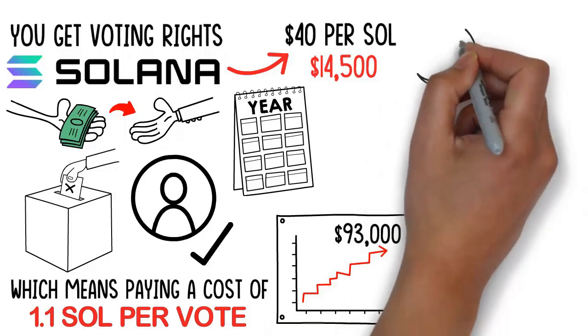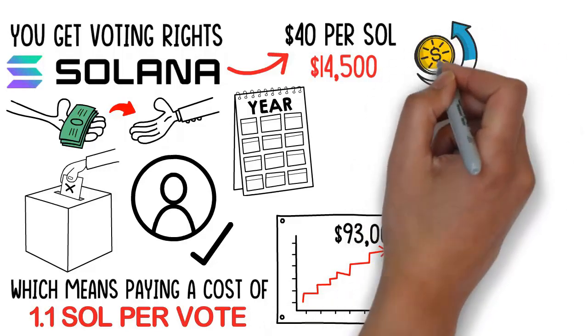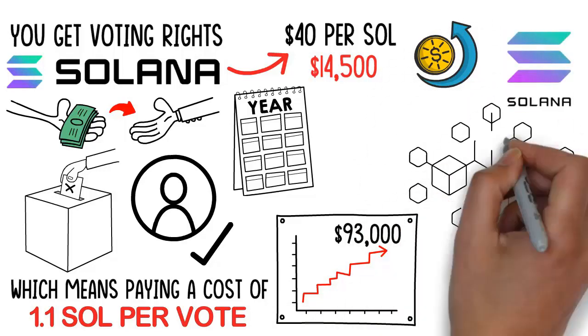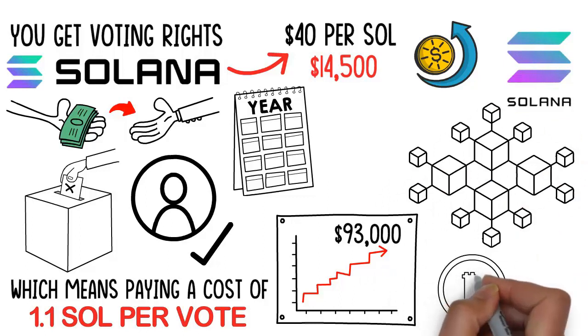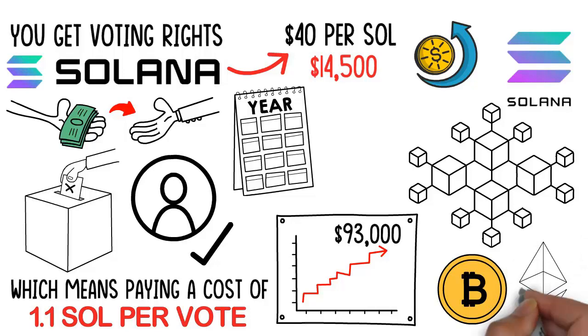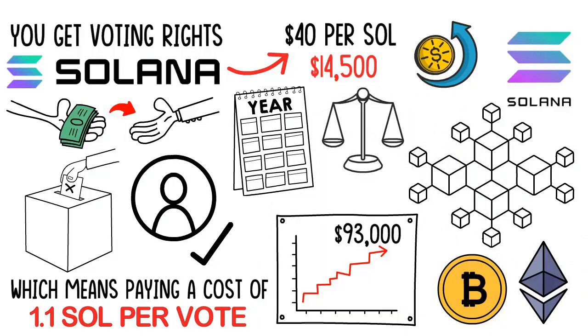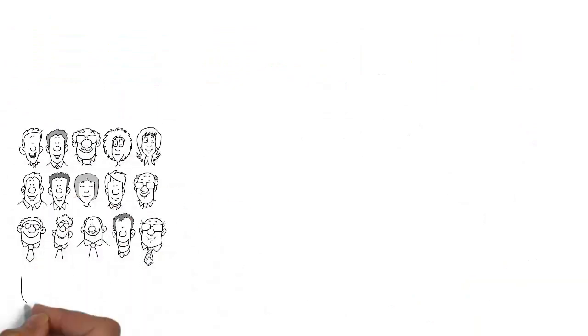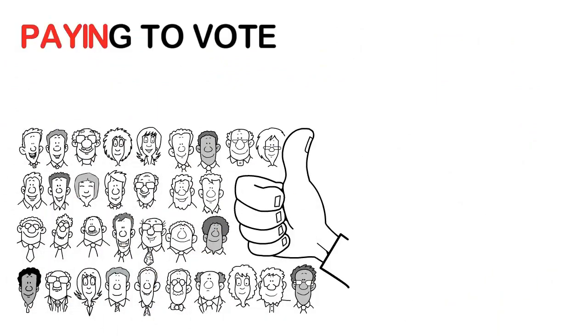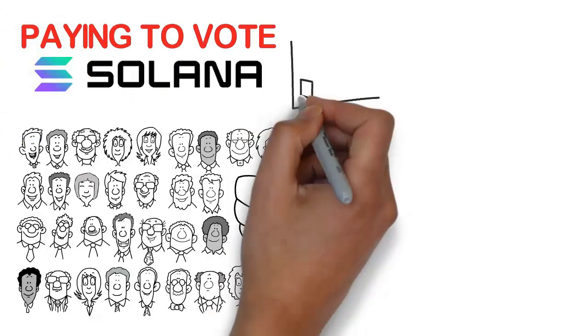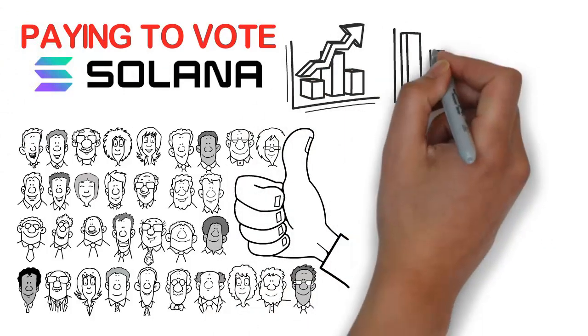But still, you're paying to vote, which is pretty unique to Solana's blockchain. And not really the best use case compared to other cryptocurrencies out there when you can have this governance system without having to pay to vote. Now, there are some advantages to it because the people that are paying to vote truly care about Solana's direction. So you can see the positives and negatives either way.